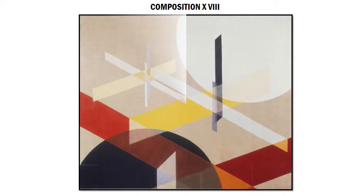Composition 18 is the work of his we focus on primarily in our class. This painting is one of his earlier pieces, completed in Hungary in the year 1924. It consists of various transparently colored geometric shapes that overlap and intersect one another. For our assignments, the painting was split into quadrants for independent analysis.